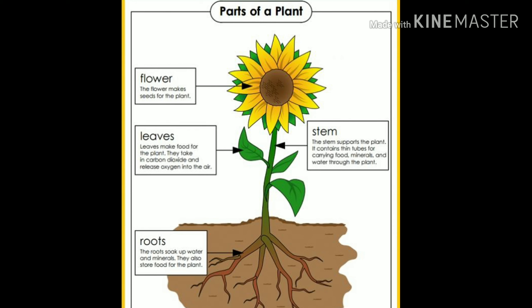The teacher should explain that the body of a plant can be divided into two main parts. The part below the surface of the ground is called the root, and the part above the ground is called the shoot. The shoot consists of the stem, leaves, flowers, and fruits.